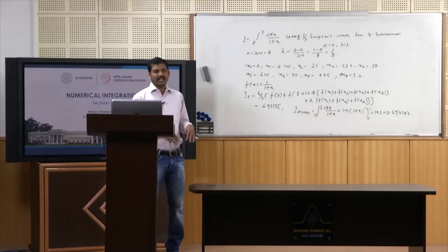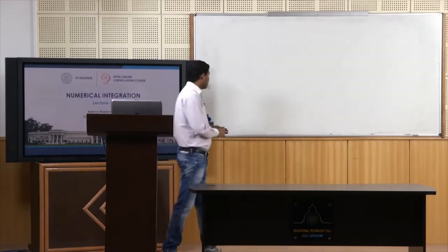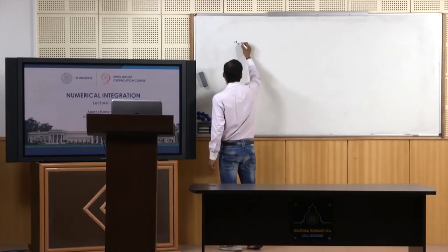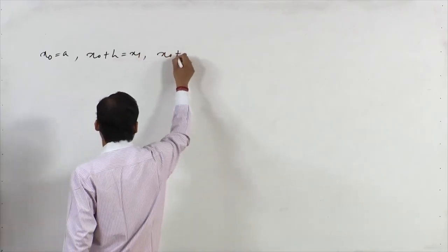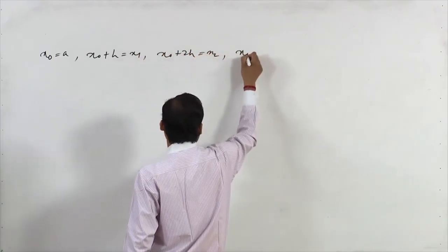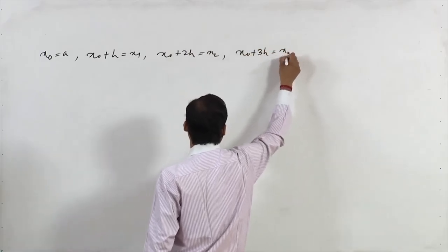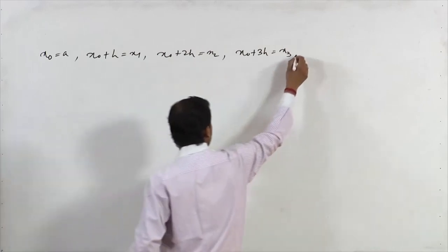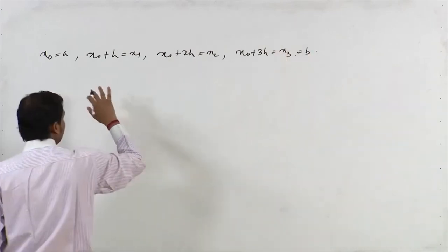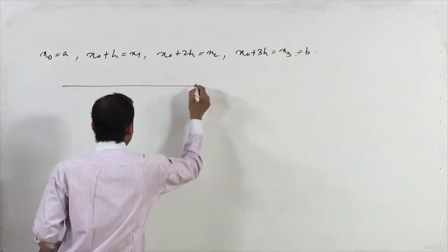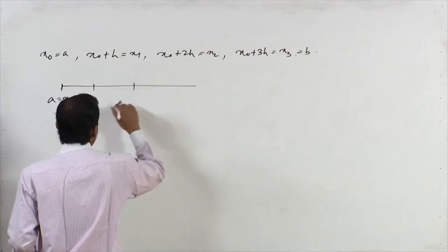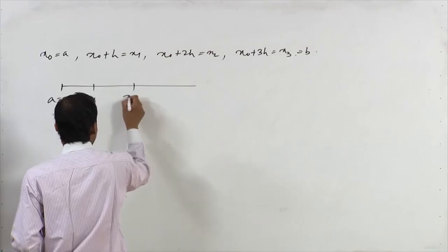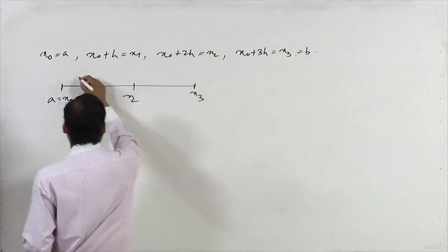For Simpson's 3/8 rule, h = (b-a)/3. The nodal points are: x0 = a, x1 = x0+h, x2 = x0+2h, x3 = x0+3h = b. The interval [a, b] is subdivided into 3 sub-intervals of equal spacing h.